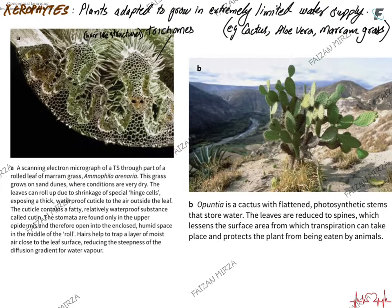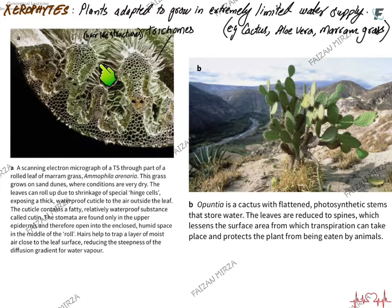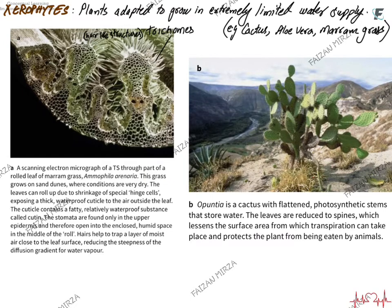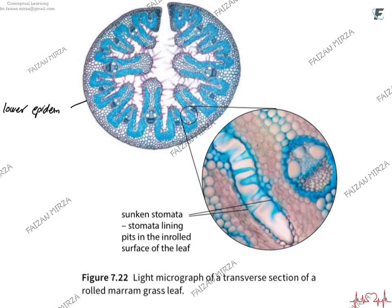Xerophytes are plants adapted to grow in extremely limited water supply, for example cactus, aloe vera, or marram grass. In cactus, there are flattened stems which store water — they have a gel-like substance inside — and the leaves are reduced to thorns. This reduces the surface area exposed to sunlight, minimizing water loss. The thorns also prevent the plant from being eaten by herbivores.